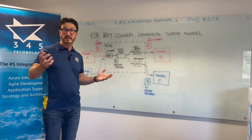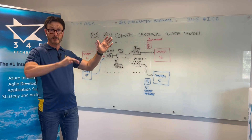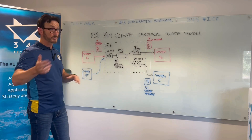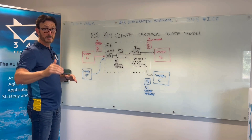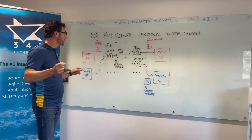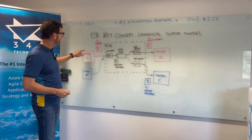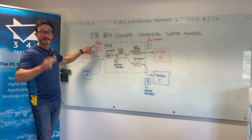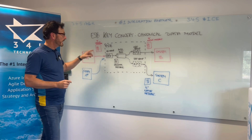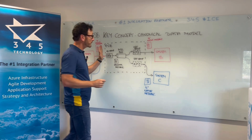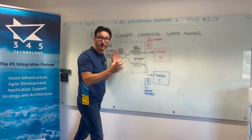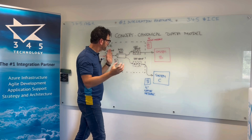Let's say that's a purchase order — it's got a header and it's got lines. Every purchase order has a header and lines, but the format of them is different. So if System A is sending it in, that's going to be a native format, and what I want to do is protect the internals of the bus from that native format.